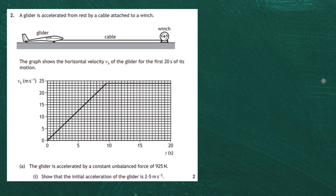The graph shows the horizontal velocity v_h of the glider for the first 20 seconds of its motion. Part a: the glider is accelerated by a constant unbalanced force of 925 newtons. Part i asks us to show that the initial acceleration of the glider is 2.5 meters per second squared. We have a velocity-time graph, and the gradient of a velocity-time graph gives the acceleration.